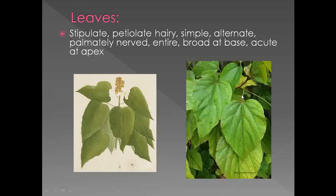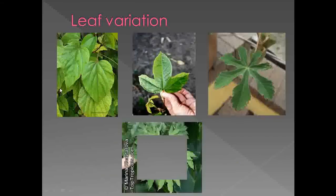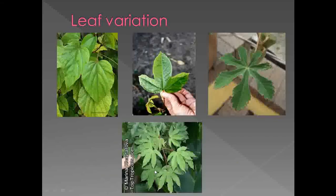To summarize the leaf characters: the leaves are stipulate, show presence of long hairy petiole, leaves are simple with alternate phyllotaxy, they are palmately nerved, entire margins, broad at base, acute at apex, and show presence of reticulate venation. Variations observed in the family Bixaceae include simple leaves, palmately compound leaves, and lobed leaves.